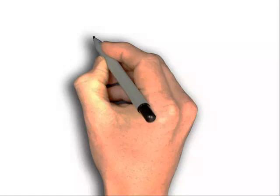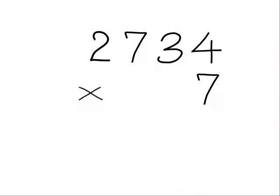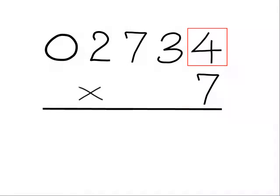Let's have a look at an example. 2734 times 7. First thing we'll do is put a 0 in front of our number, then we start at the right hand side.